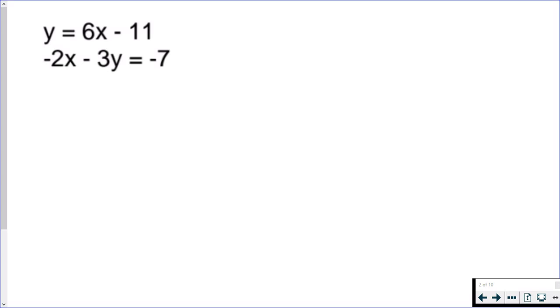I am going to use substitution in this case, and the reason is because one of my variables is already isolated in one of the equations. In other words, the first equation, y equals 6x minus 11, already has y by itself. So if you have a system in front of you where either x is already by itself or y is already by itself, or it looks like you could just take one step in getting one of the variables by itself, then I would use substitution.